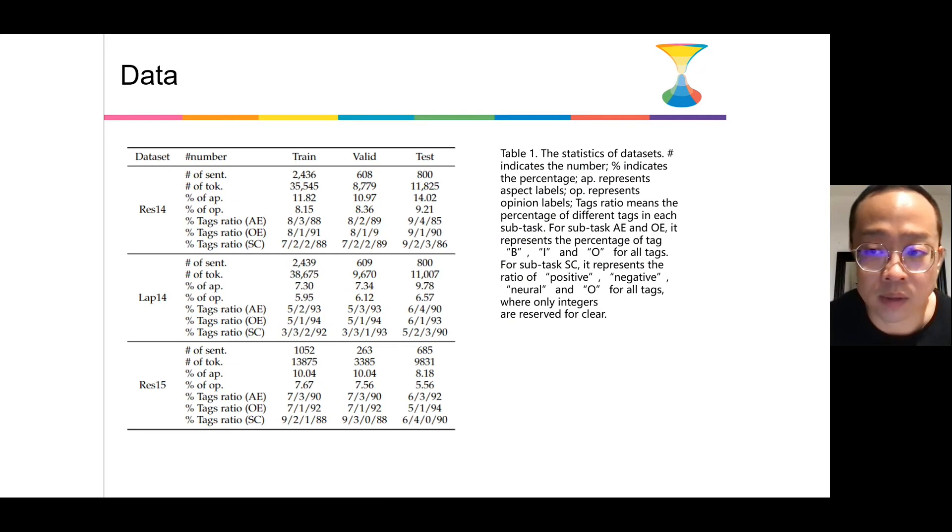And we carry out the experiment in three datasets to demonstrate our method: Restaurant 14, Laptop 14, and Restaurant 15. All these datasets come from the SemEval evaluation. As shown in the table, the tag 'others' exceeds 90% in all these three datasets. The imbalance distribution is very obvious. And that's the main reason why we need self-training and re-weighting.